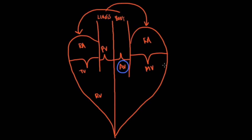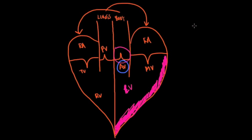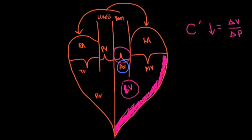Because there is stenosis at the aortic valve, pressure builds up inside the left ventricle, and as a result the muscle gets thicker — causing what we see in terms of hypertrophy. The compliance of this area is going to go down. Compliance, by definition, is the change in volume over the change in pressure. If compliance goes down, it takes a very large pressure change to make a very small change in volume — meaning the left ventricle becomes very stiff.